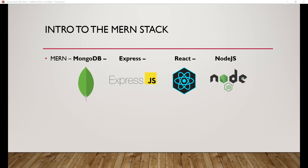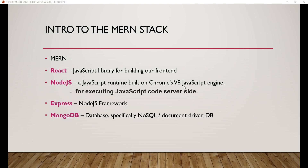So now we are here with the big question: what is the MERN stack? MERN is actually an acronym — M stands for MongoDB, E stands for Express, R stands for React, and N stands for Node.js. This is just the logo for the four of them.